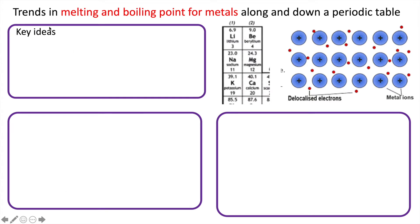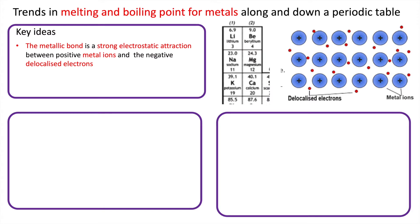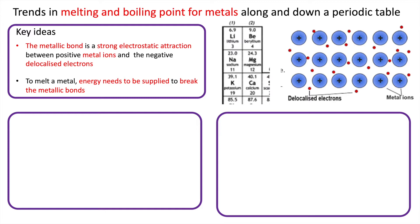In this short video we look at the trends in melting and boiling points for metals as you go along a period and down a group. We need two key ideas. A metallic bond is a strong electrostatic attraction between the positive metal ions and the negative delocalized electrons — not free electrons or valence electrons, they are delocalized and free to move. To melt a metal, energy must be supplied to break these metallic bonds, so if the melting point is lower, the metallic bonds must be weaker — and you need to explain why.